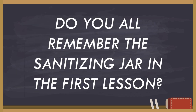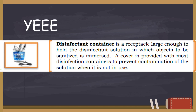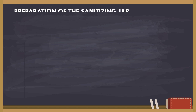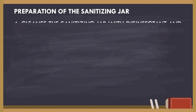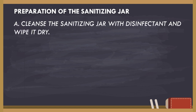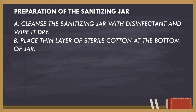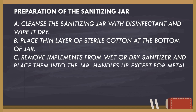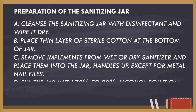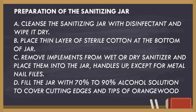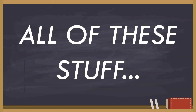Remember the sanitizing jar from the first lesson? It may have been called the disinfecting container. Here's how to use it: cleanse the sanitizing jar with disinfectant and wipe it dry; place a thin layer of sterile cotton at the bottom of the jar; remove implements from wet or dry sanitizer and place them into the jar handles up, except for metal nail files; then fill the jar with 70%–90% alcohol solution to cover cutting edges and tips of orange wood sticks. That's how you maintain your nail care tools.